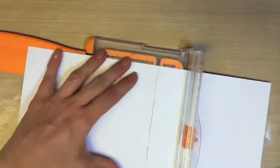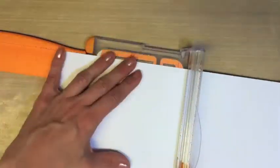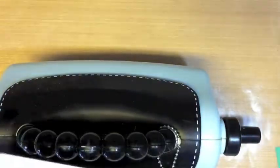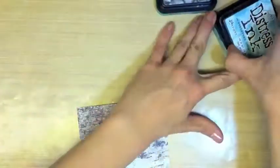This is the paper that I used for the Granite Mountain. It's from Die Cuts with a View Weathered and Worn Stack. I'm going to add a little stubble to these mountains, so we're embossing it with the Swiss Dots by ProvoCraft.